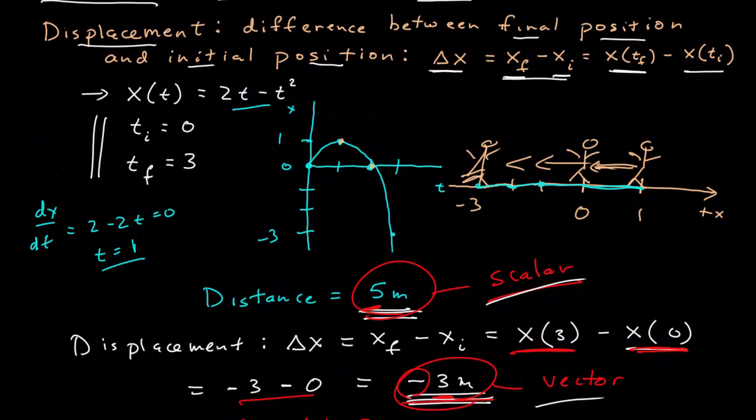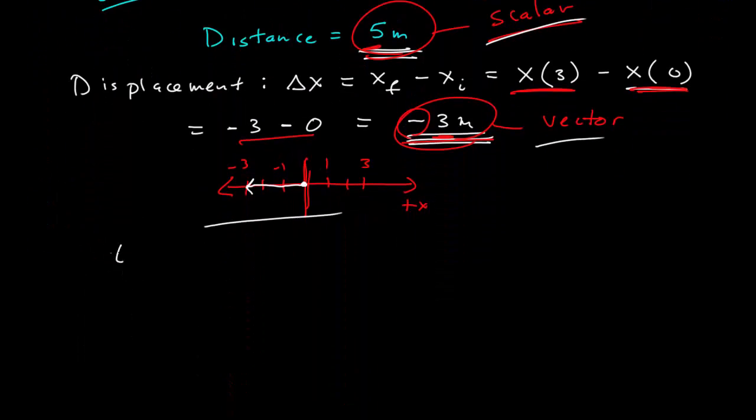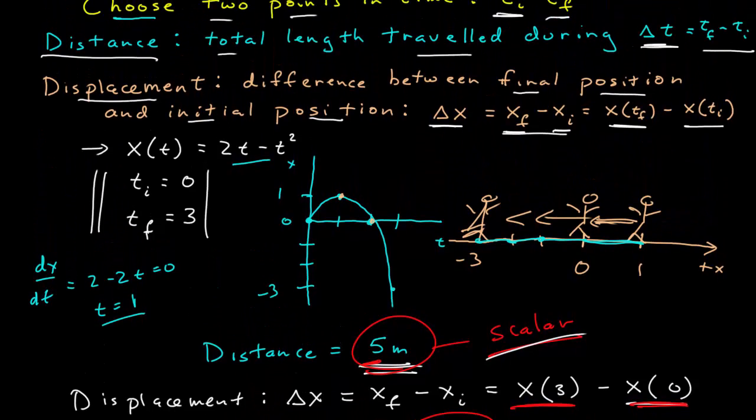Imagine if you were going, instead of between the initial time zero and three, the initial and final time, initial equals zero and t final is equal to two. Well, in two seconds, if I put two into here, x of two is equal to zero again. So that's essentially the time it took the person to walk to one meter, x equals one, and then back to where the person started from. The total distance traveled would be two meters, while the displacement, which is the difference between the initial and final position, is zero because the initial and final position was the same.